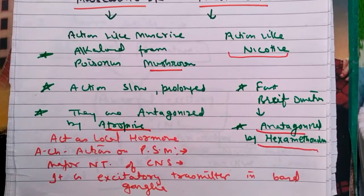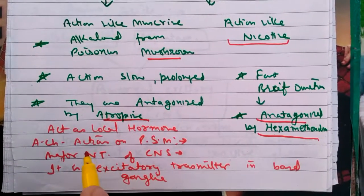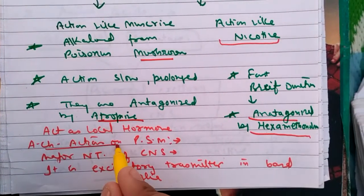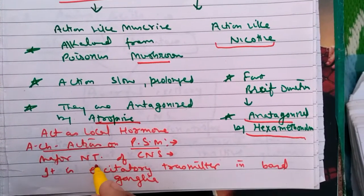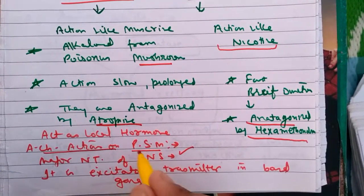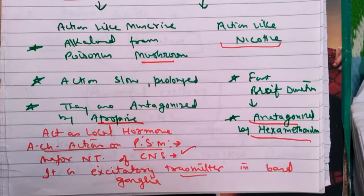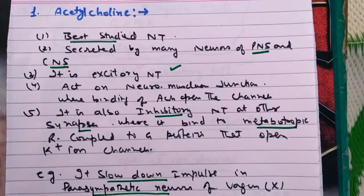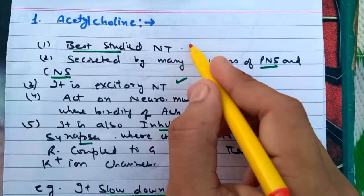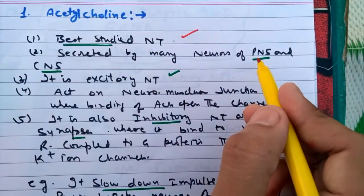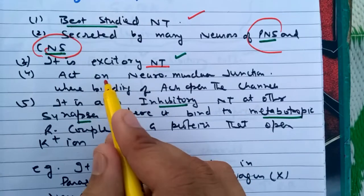Acetylcholine can also act as a local hormone. It acts on major neurotransmitter roles in the central nervous system and peripheral nervous system, and it is an excitatory transmitter in the vessel ganglia. It is the best-studied neurotransmitter, secreted by many neurons of both the peripheral and central nervous systems.